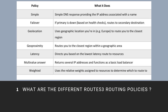Geolocation: uses geographic location you are in to route you to the closest region. Geoproximity: routes you to the closest region within a geographic area. Latency policy: directs you based on the lowest latency route to resources.